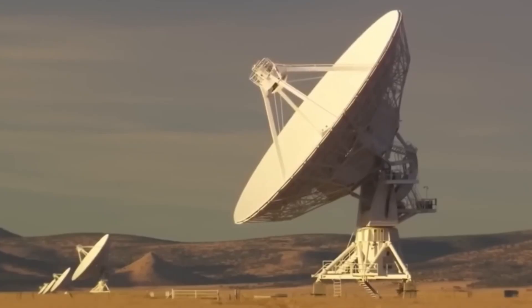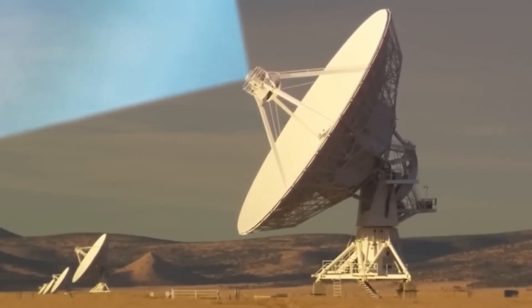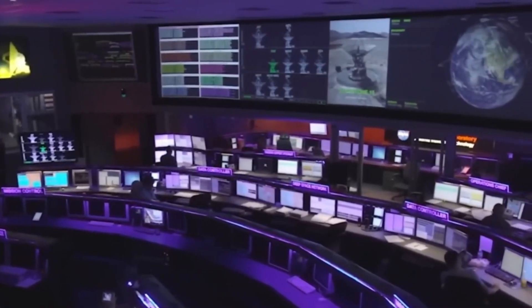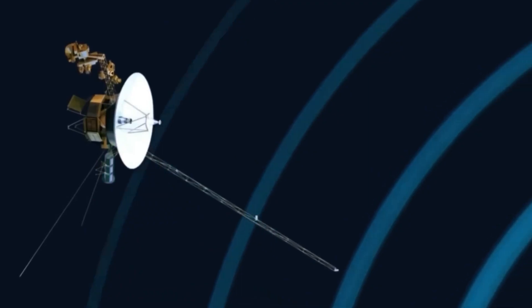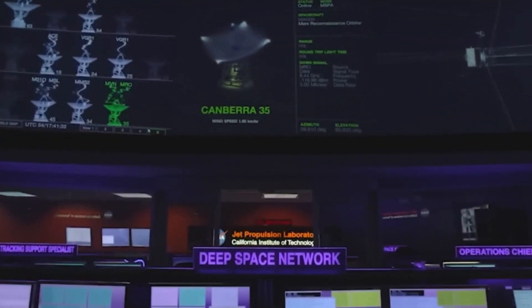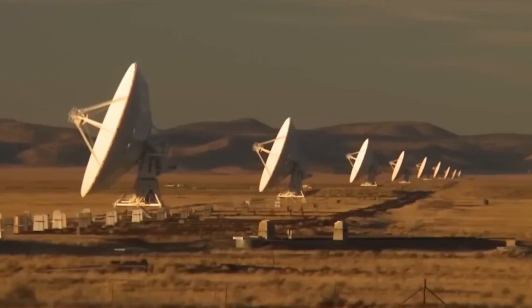One of Voyager 1's primary targets was Titan, Saturn's largest moon. Titan's dense, hazy atmosphere sparked speculation about its similarities to early Earth. Voyager 2 reached Saturn in August 1981, further enriching our knowledge and helping answer questions raised by its twin's earlier visit.